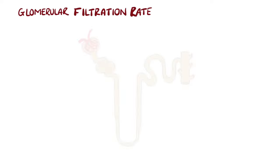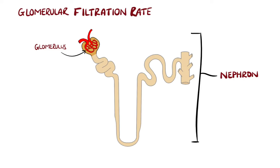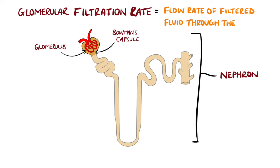The functional unit of the kidney that actually does this is the nephron, made up of the glomerulus, which is a modified capillary. As blood passes through it, the waste is filtered into the Bowman's capsule. GFR is the volume filtered through the glomerulus into the Bowman's capsule and through the nephron in a given unit of time.